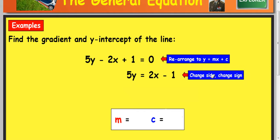Some people remember this. You change your side, you change your sign. So the negative 2x becomes a plus 2x. The plus 1 becomes a negative 1.